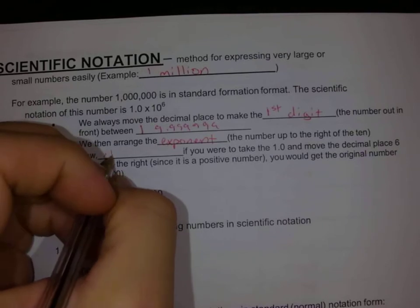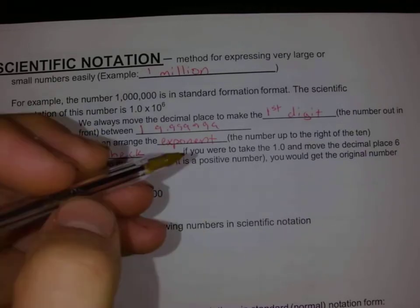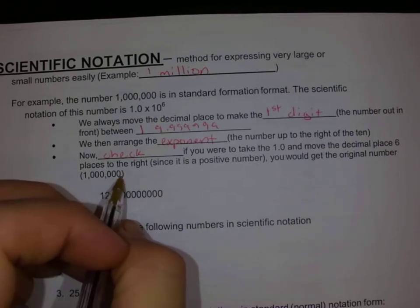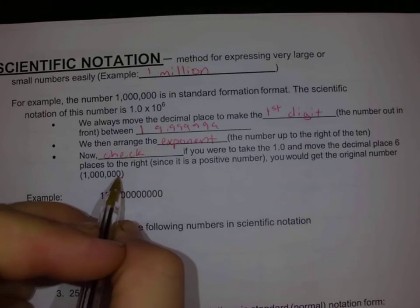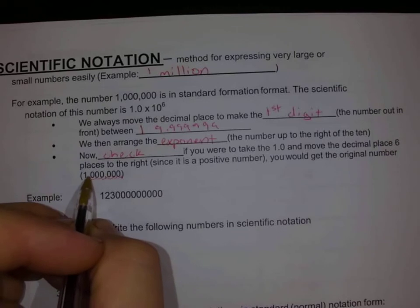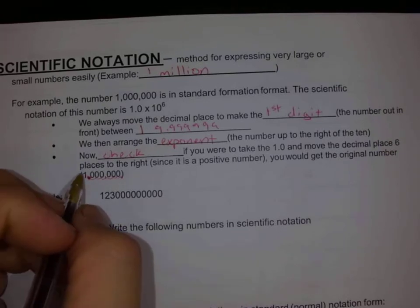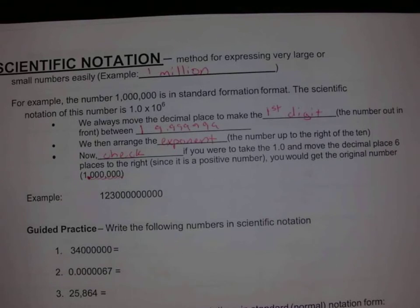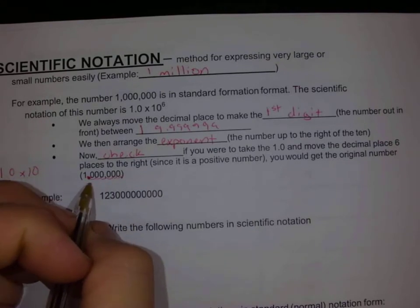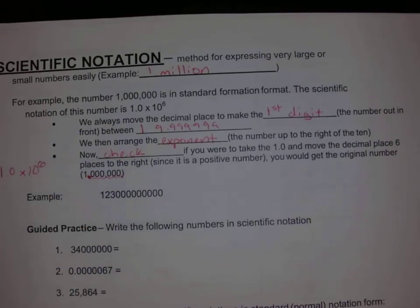Now we check: if we take the 1 in one million and move the decimal place the correct number of times — counting 1, 2, 3, 4, 5, 6 times to the left — now we only have one number before the decimal place. So we write it as 1.0 times 10 to however many times we moved the decimal. We moved it 6 times to the left, so it's 1 times 10 to the 6th.